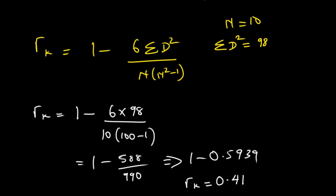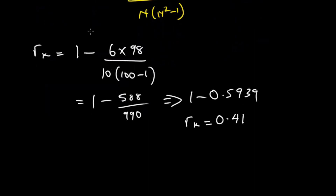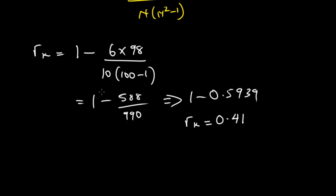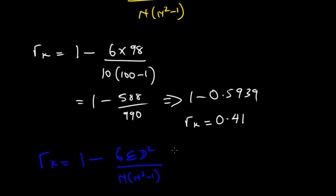That's how you can calculate the Spearman's Coefficient of Rank Correlation. Don't forget that the main formula is rk equals 1 minus 6 times the summation of d squared, over n times (n squared minus 1), and this is the formula we are going to be using at all times to calculate the Spearman's Coefficient of Rank Correlation.